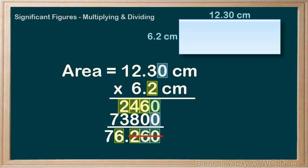Also note that after the six we have a two, and that's less than five, so there's no rounding up. And our answer becomes 76 centimeters squared.